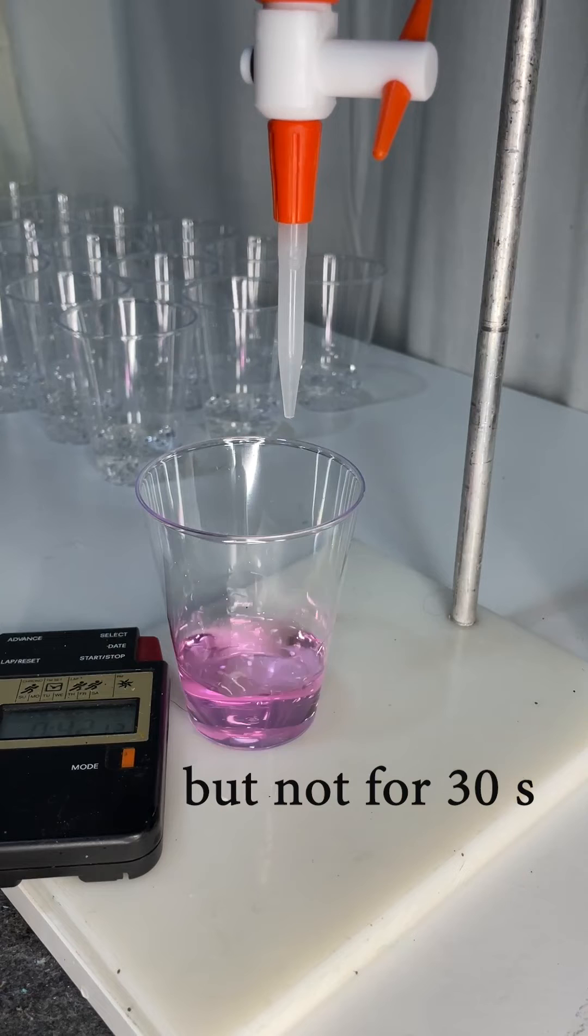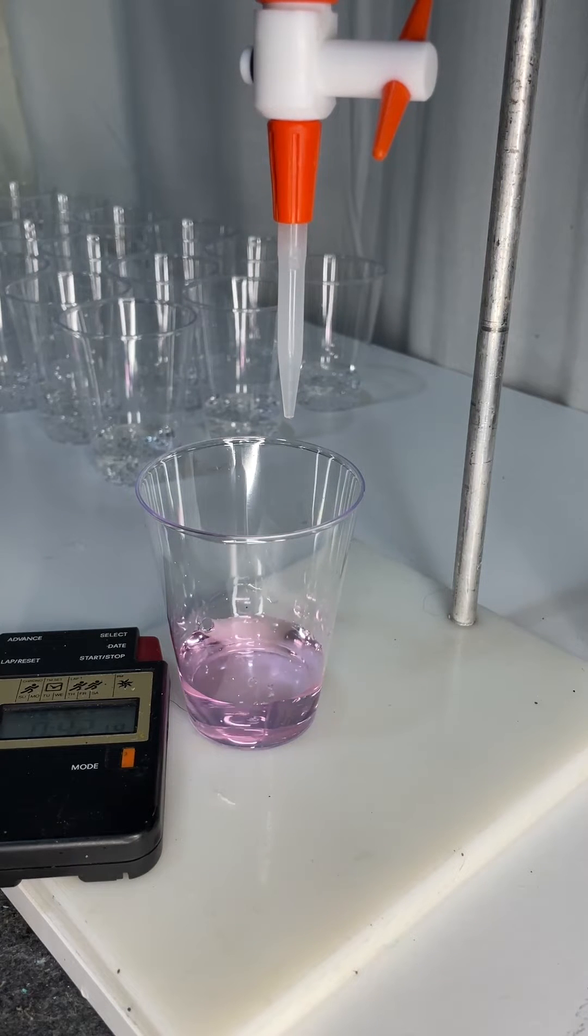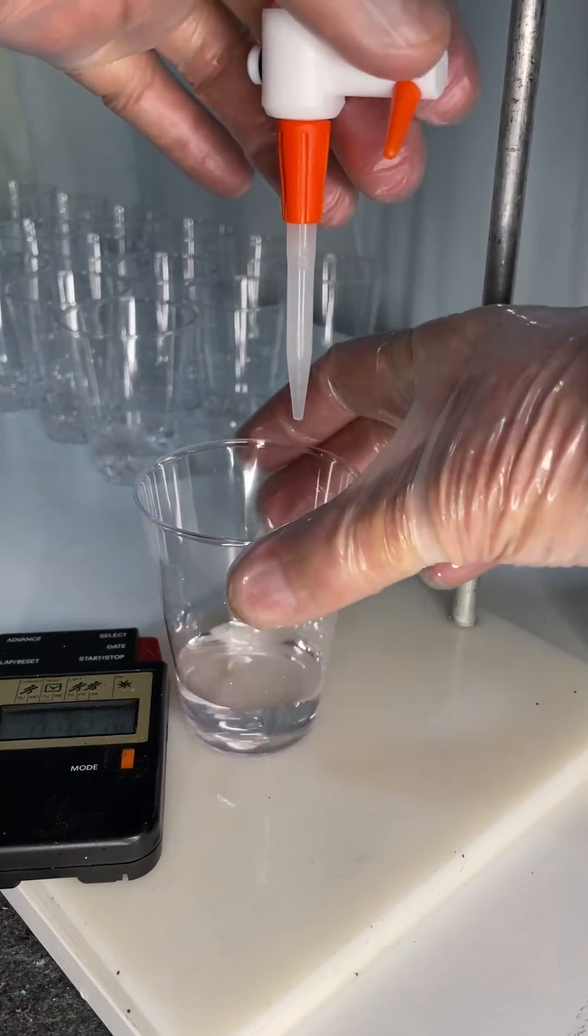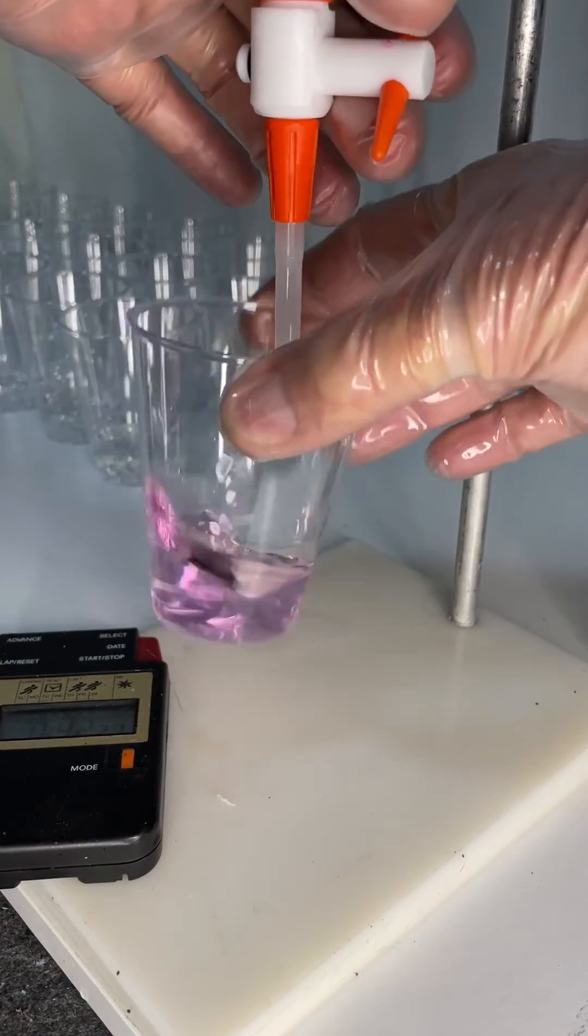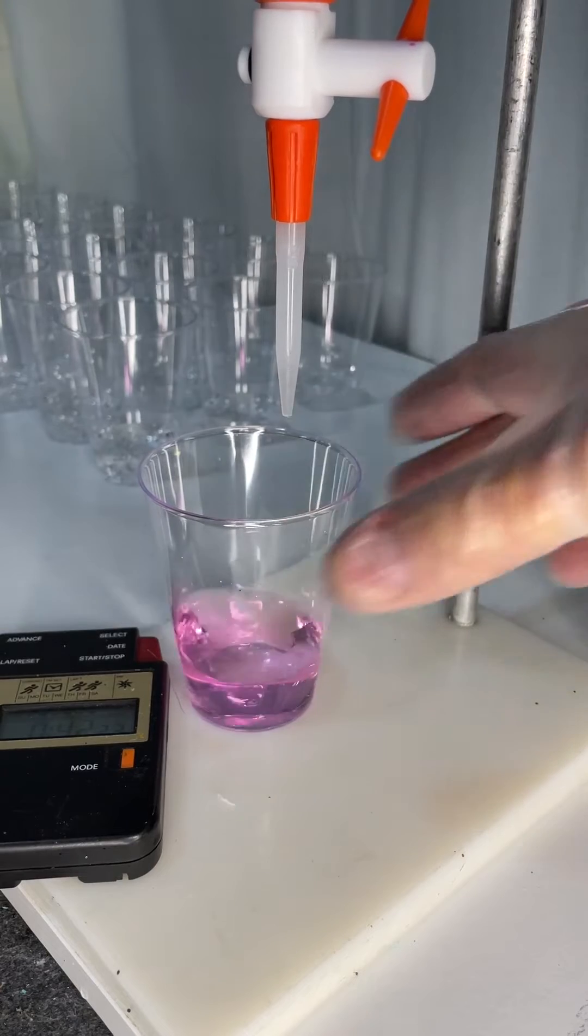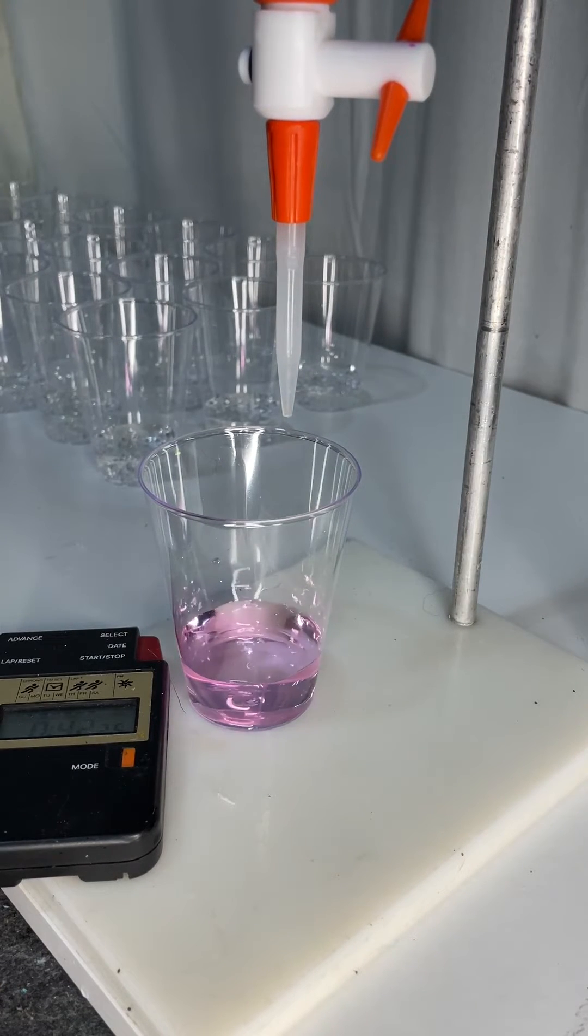So I've added a little bit more, another drop, and it's lasting maybe five seconds until it goes clear. The pink color's gone so I just keep adding sodium hydroxide until I get that faint pink lasting 30 seconds.